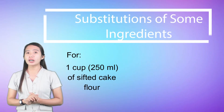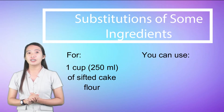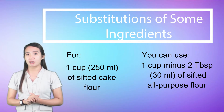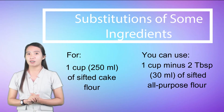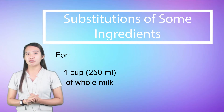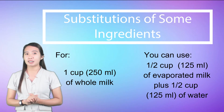For 1 cup or 250 milliliters of sifted cake flour, you can use 1 cup minus 2 tablespoons or 30 milliliters of sifted all-purpose flour. For 1 cup or 250 milliliters of whole milk, you can use 1/2 cup or 125 milliliters of evaporated milk plus 1/2 cup or 125 milliliters of water.